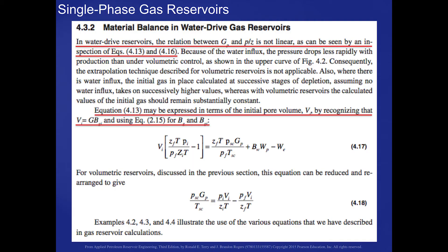Let's take a look at material balance in a water drive reservoir. In a water drive reservoir, we include the water production and the water encroachment term, so equation 4.17. There's no arrangement that we can do to give us a straight line in this case, so we simply have to use this equation to make our calculations for gas produced or water encroachment, whatever term we're looking for.